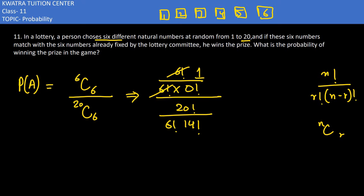So 6C6 equals 1. For the denominator, we have 20 factorial over 6 factorial times 14 factorial. We can write 20 factorial as 20 × 19 × 18 × 17 × 16 × 15 × 14 factorial. So 14 factorial cancels.